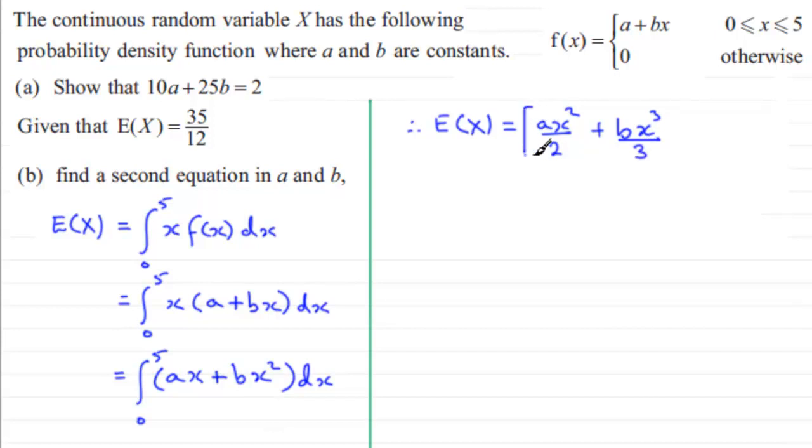We've got our limits going between 0 and 5. So if we substitute first of all with x equaling 5, we end up with a multiplied by 5 squared over 2, and then plus b times 5 cubed all over 3. And then if we substitute 0 in, we have to take away what we get when we put 0 in.